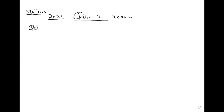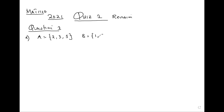Question one. A is the set {2, 3, 5}, B is {1, 3, 6, 7}, C is {0, 2, 5}. The universal set X is the set of whole numbers less than 10.